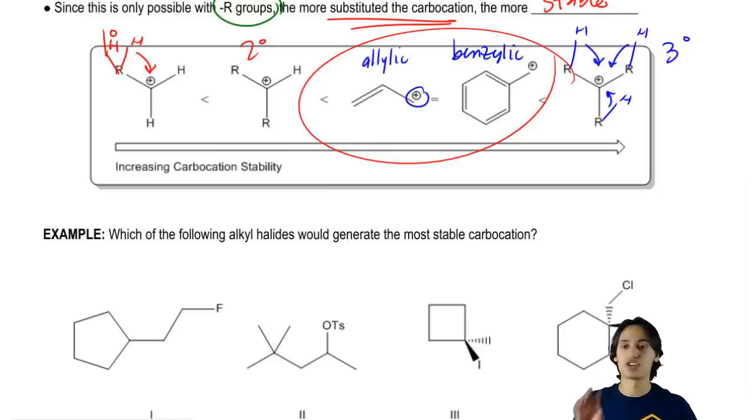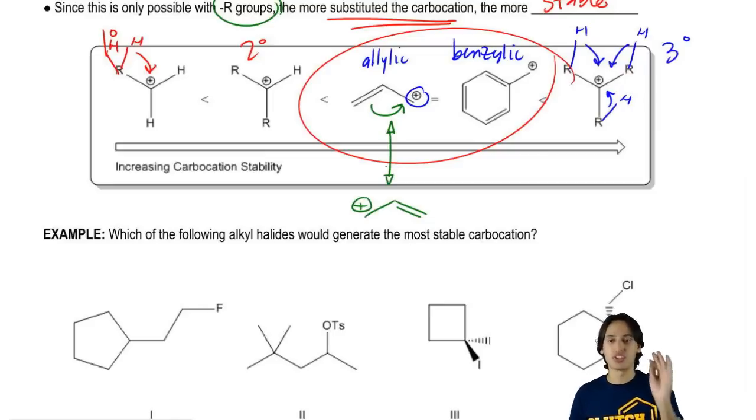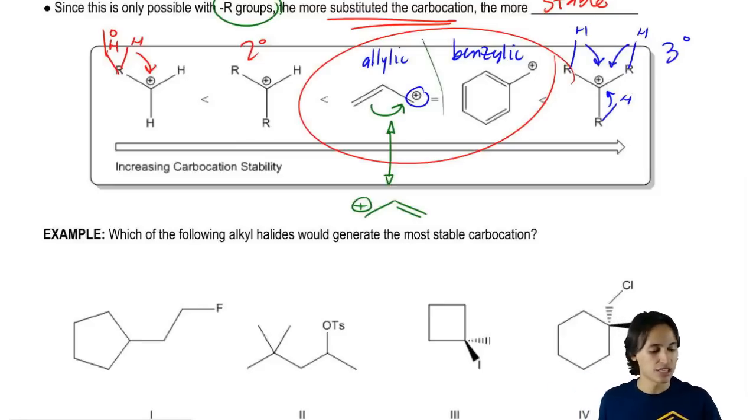Remember when we talked about resonance structures way back that a positive charge next to a double bond could resonate and it would form another resonance structure that looked like this. That is a form of delocalization where now my positive charge isn't just stuck in one place. It can be distributed over several atoms so that's going to be more stable.